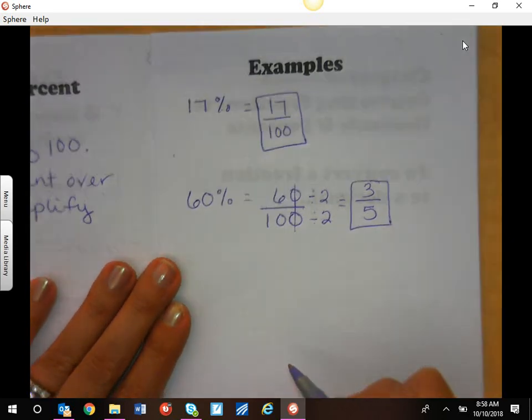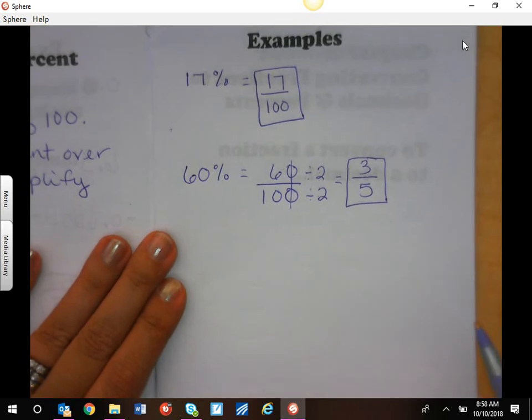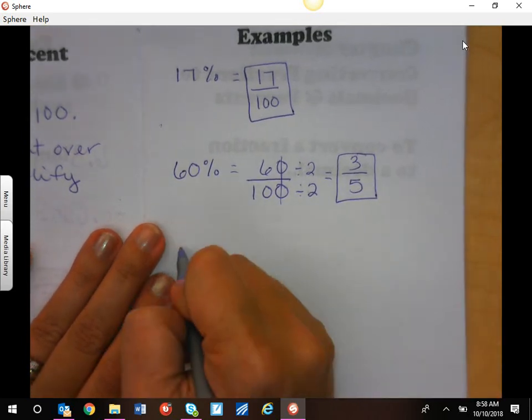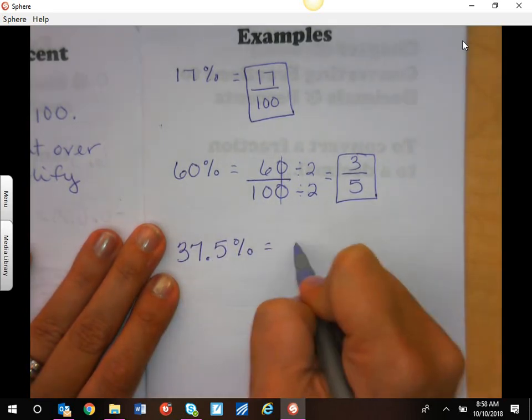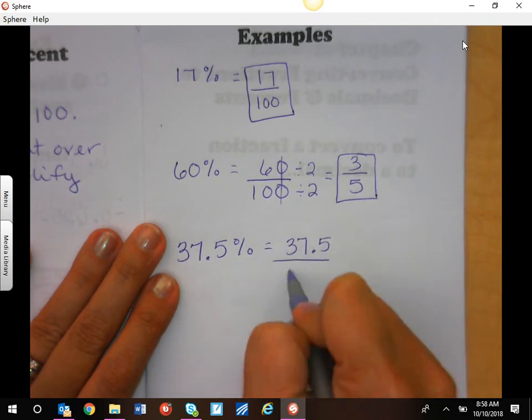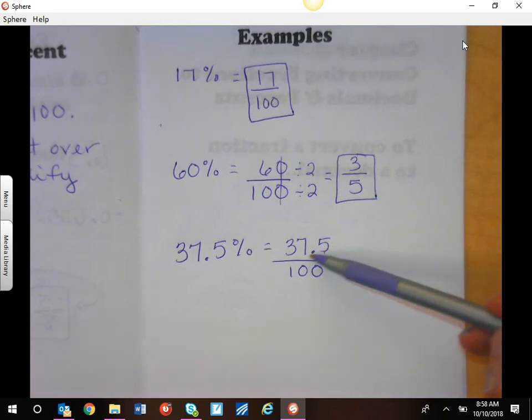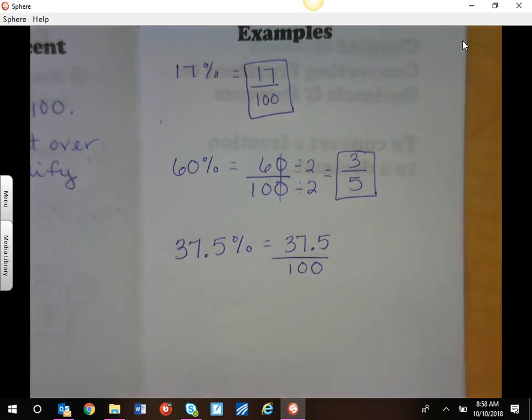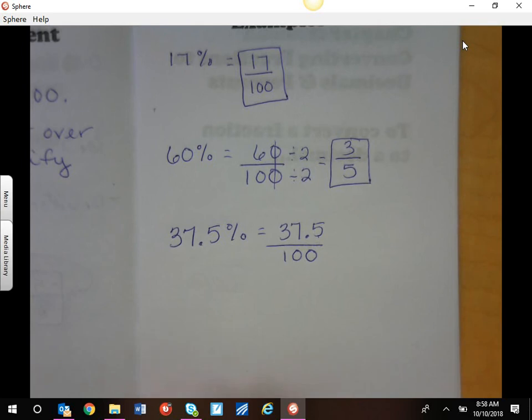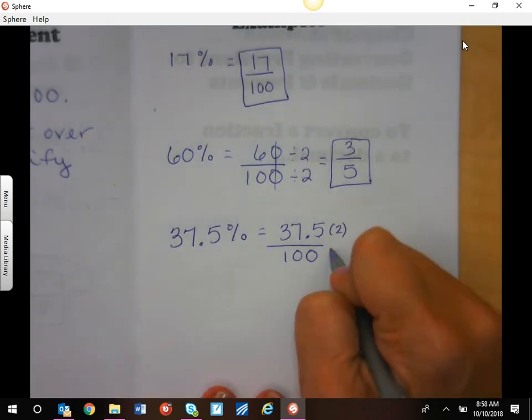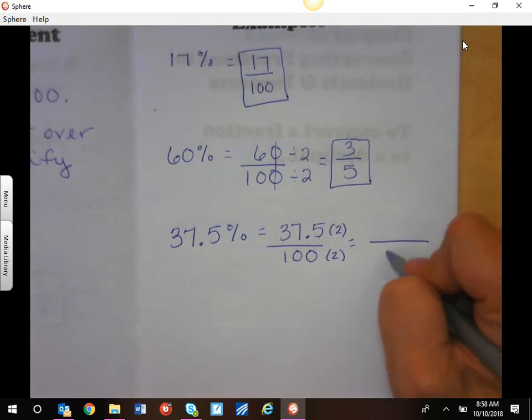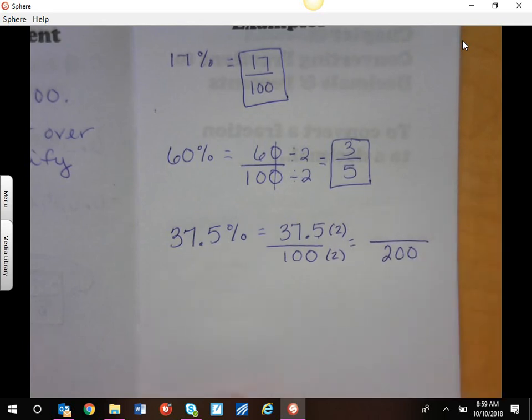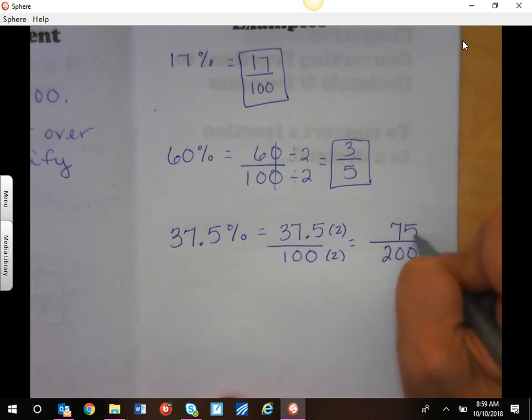We can also do this with decimal percentages. Percentages do not have to be a whole number. We can write 37.5 percent. Let's write that over a hundred. Now it gets a little funky because we do have a decimal, but we can go ahead and change that. I know if I multiply this by two, I will get rid of that decimal. So we're going to kind of make it bigger in order to make it smaller. I know two times a hundred is 200. Two times 37 and a half is 75.